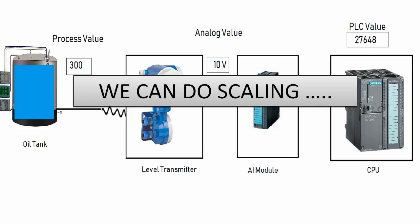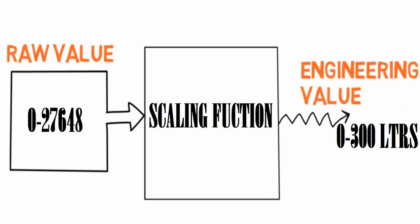To get the actual level between 0 to 300, we have to perform the scaling concept. Scaling means taking a raw value in the range 0 to 27648, passing it through a scaling function, and getting the engineering value. This will be explained in the next session for Siemens PLC S7-300. The process of taking a raw value as input and converting it into an engineering value is called scaling.